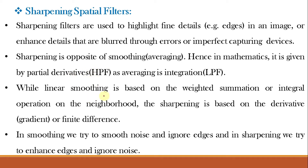As linear smoothing is based on weighted summation or integral operation on the neighborhood, sharpening is based on derivative or gradient or finite difference. In smoothing, we try to smooth out noise and ignore the edges, and in sharpening, we will try to enhance the edges and ignore the noise. The principal objective of sharpening is to highlight transitions in intensity or detect the edges.